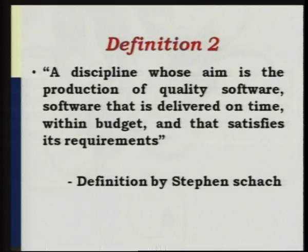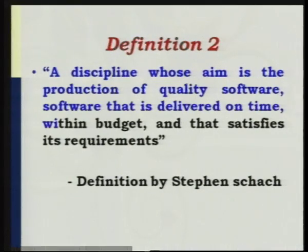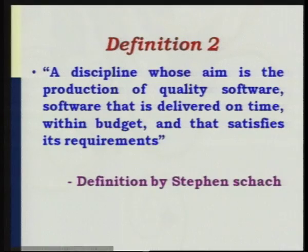We need to identify what those principles are when we develop software. The second definition is given by Stephen Shaw, who defined software engineering as a discipline whose aim is the production of quality software — software that is delivered on time, within budget, and that satisfies its requirements. There are four keywords: quality software, delivered on time, within cost, and satisfies all requirements posted by clients. These are two technical definitions given by two eminent persons on software engineering.